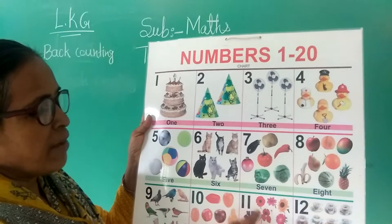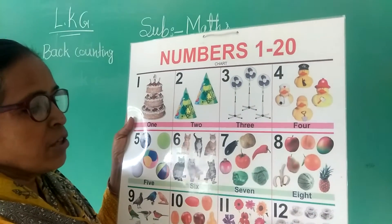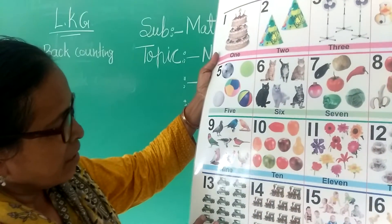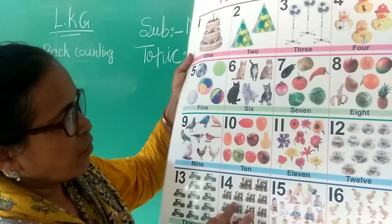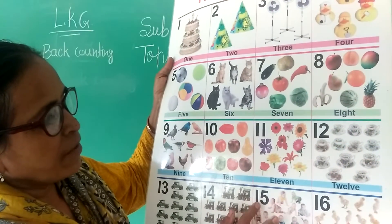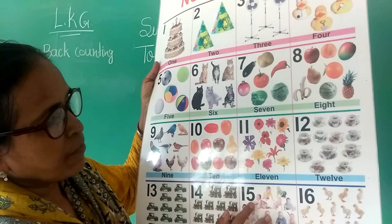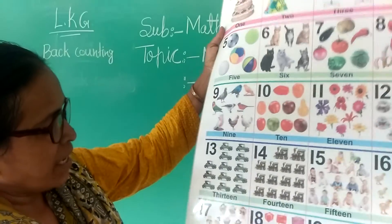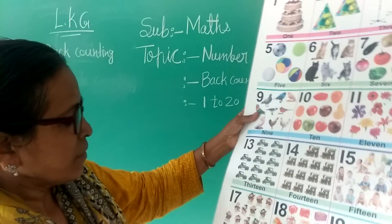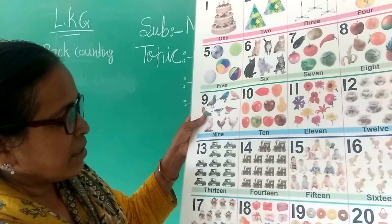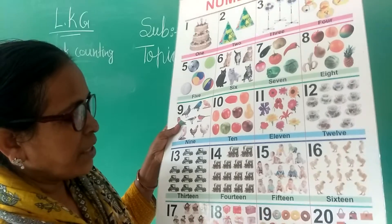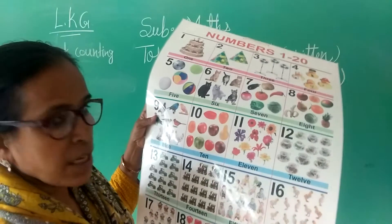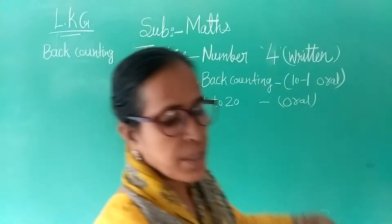10 — 10 fruits. 11 — 11 flowers. 12 — 12 cups. 13 — 13 jeeps. 14 — 14 engines. 15 — 15 children. 16 — 16 chicks. 17 — 17 children. 18 — 18 gifts. 19 — 19 chocolates. 20.